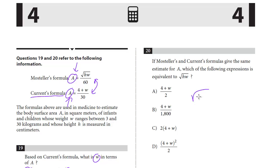So Mosteller's is the square root of HW over 60 equals Current's, which is 4 plus W over 30. And this is similar to the last question. We're just solving. We're isolating the square root of HW, which we have on the top. So we want to get rid of the 60. We're going to multiply both sides by 60. So the 60s will cancel out. We get the square root of HW.